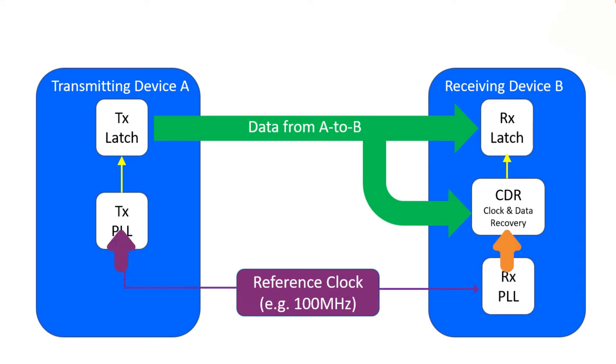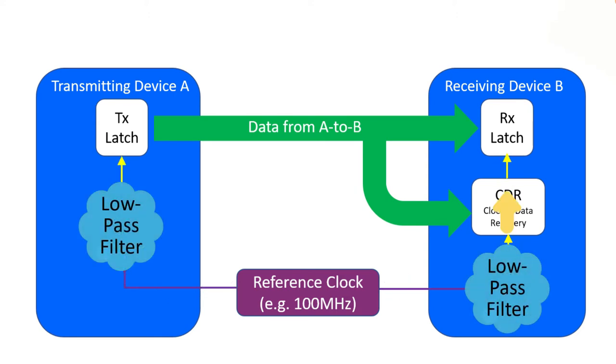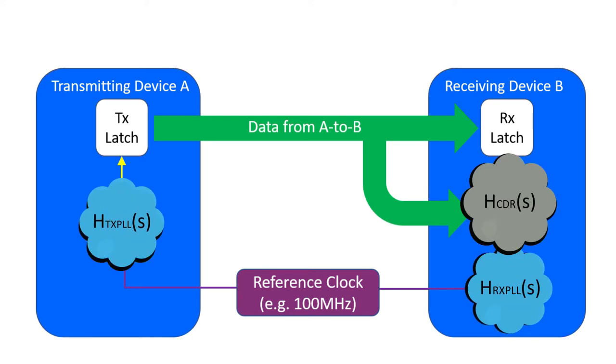Any jitter present on the reference clock is low-pass filtered by the transmit and receive PLLs, and the clock and data recovery block high-pass filters its incoming clock.